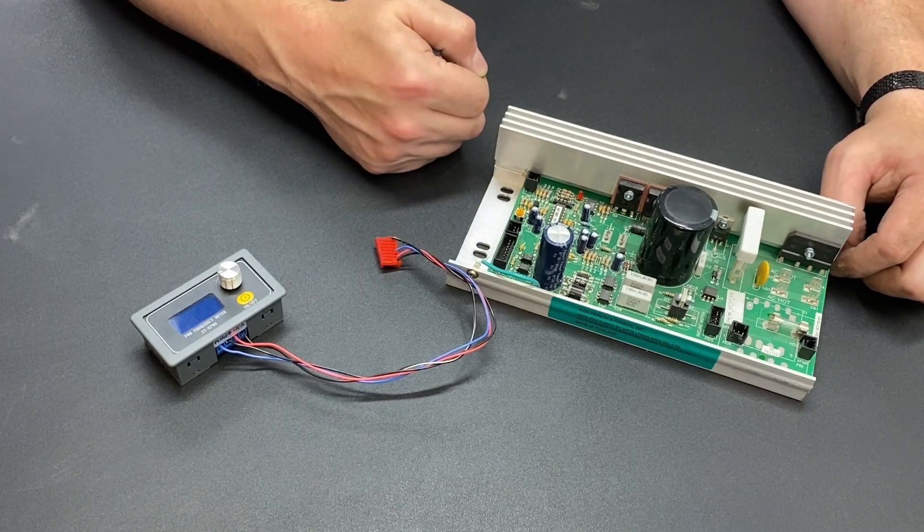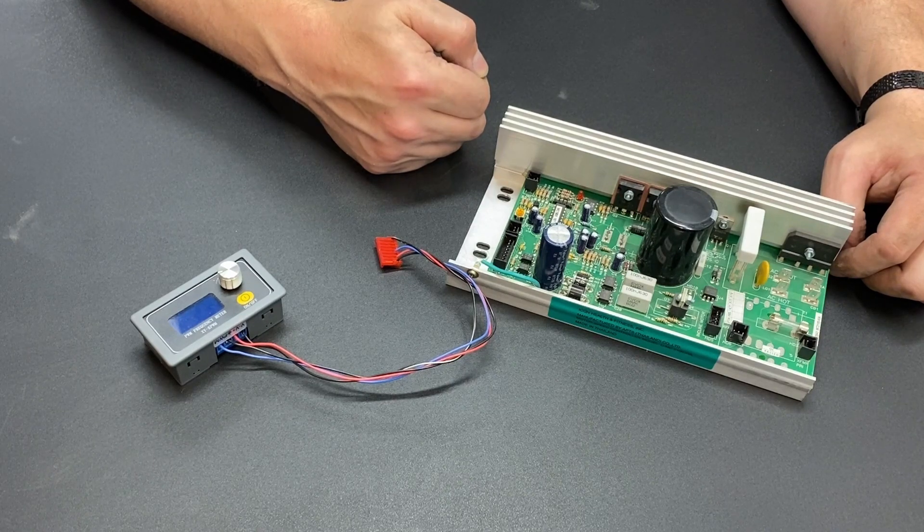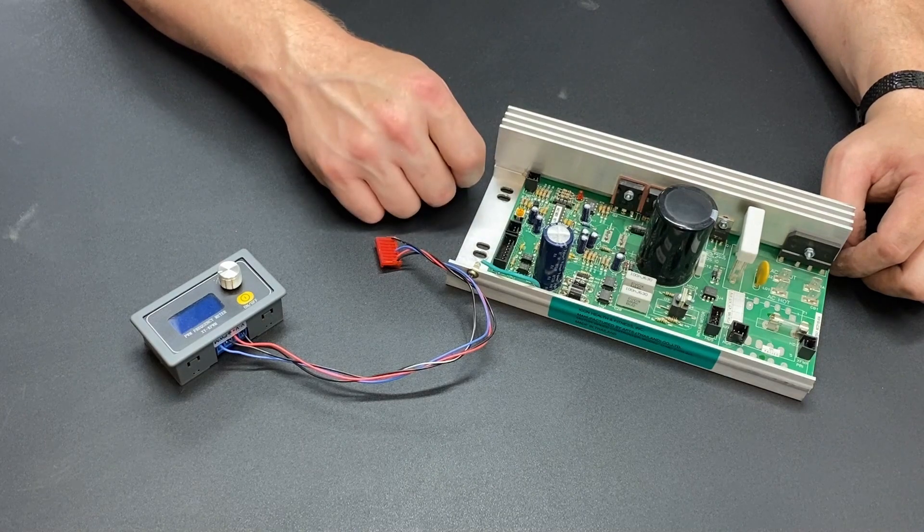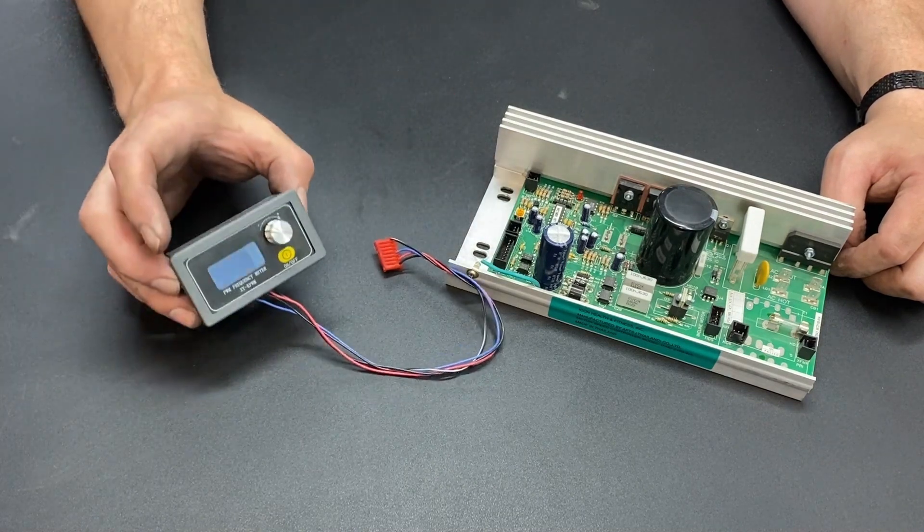The faster it pulses, the higher the voltage becomes. This is controlled by a Pulse Width Modulator signal generator, which is this right here.